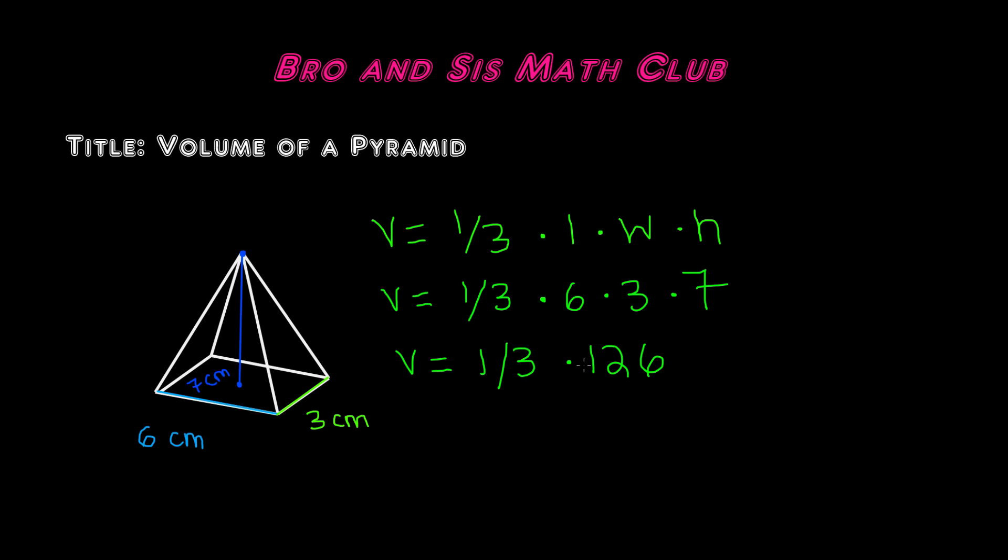If we multiply one-thirds by 126, we will get 126 divided by 3, because 1 times 126 is 126, and the 3 remains as it is. So 126 divided by 3. Now we have to divide 126 by 3 to get the answer of 42. So that means the volume of this pyramid is 42 centimeters cubed.